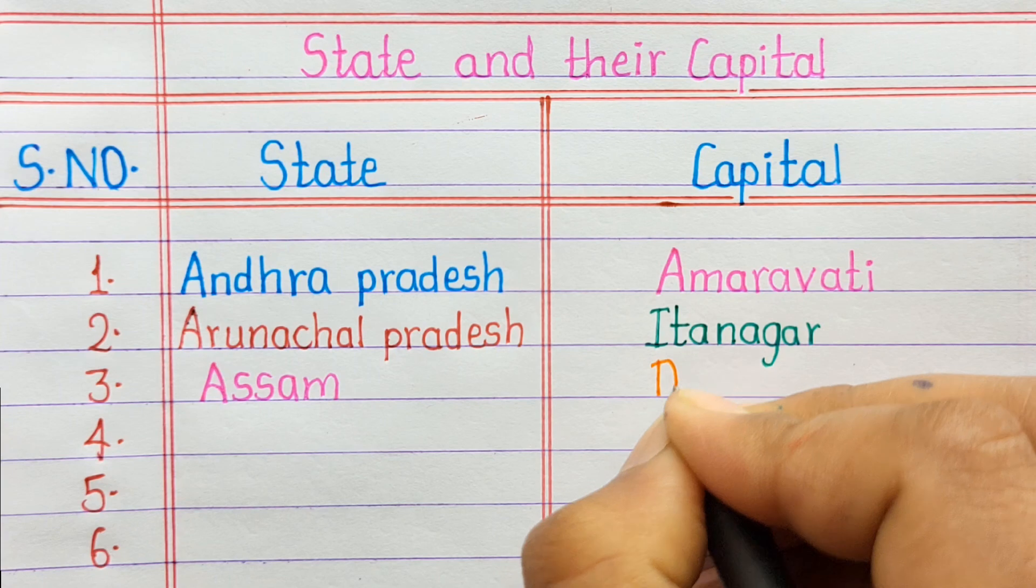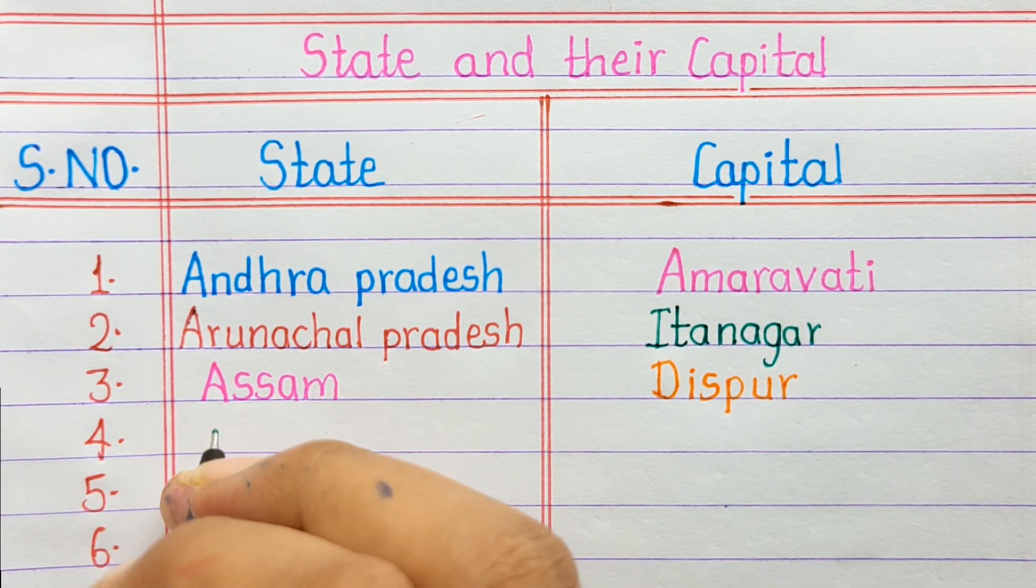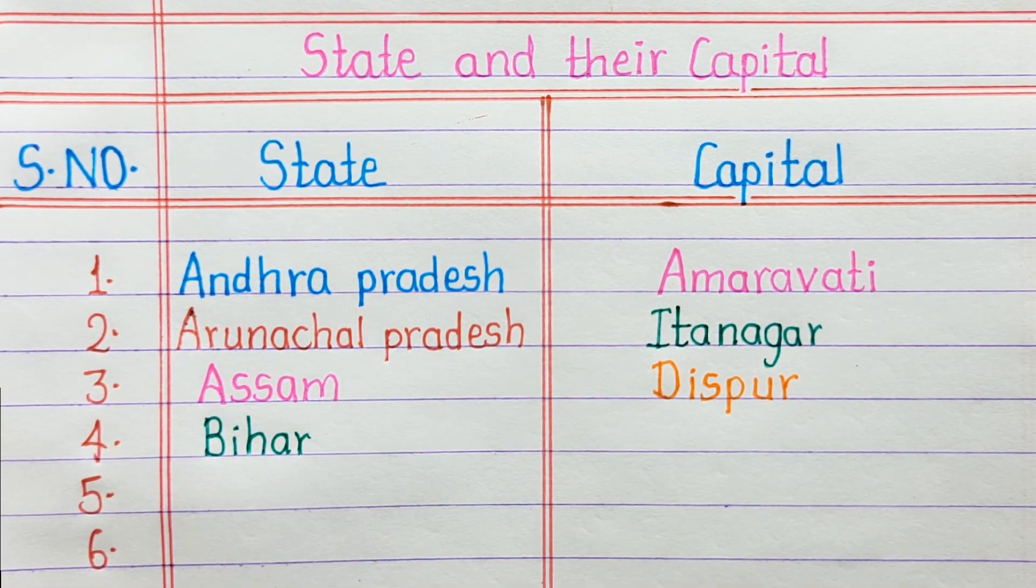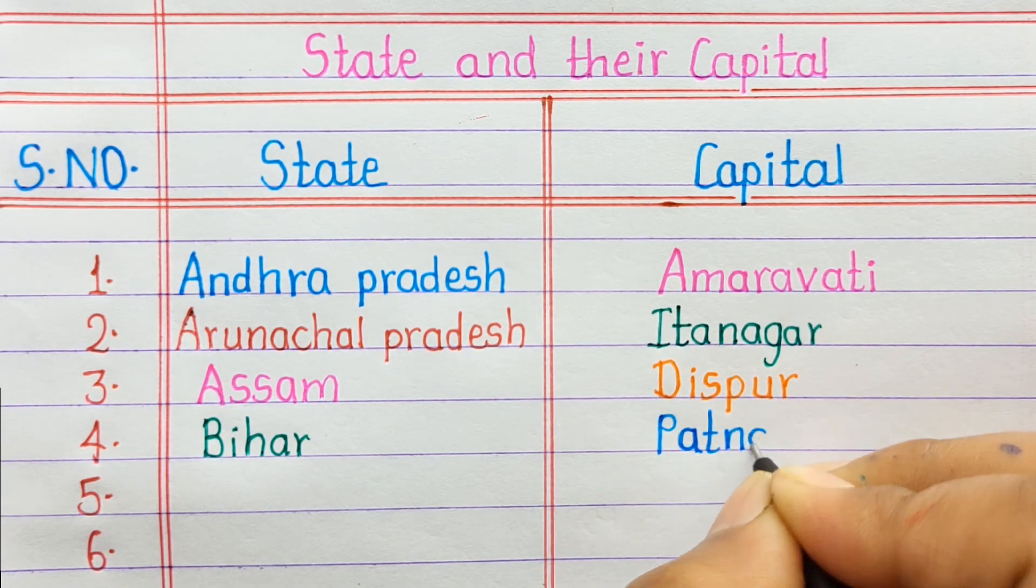Number 3. Assam, Dispur. Number 4. Bihar, Patna.